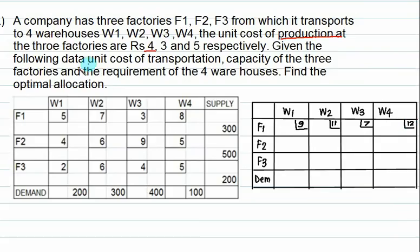The production cost for factory 2 is Rs 3. So the total costs become: 4+3=7, 6+3=9, 9+3=12, and 5+3=8. For factory 3, the production cost is Rs 5.